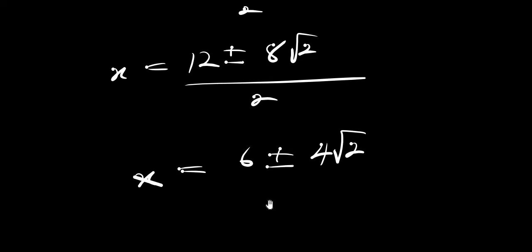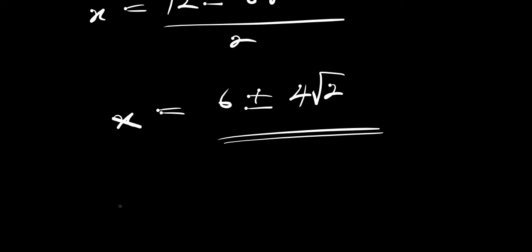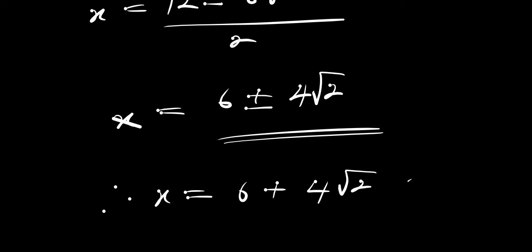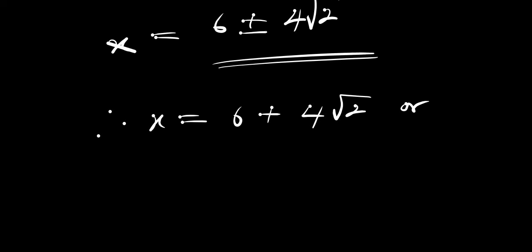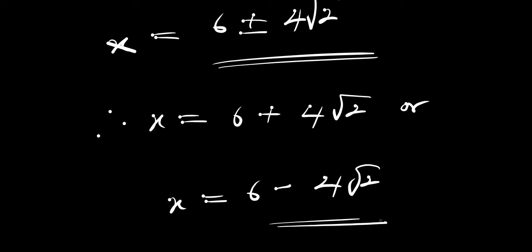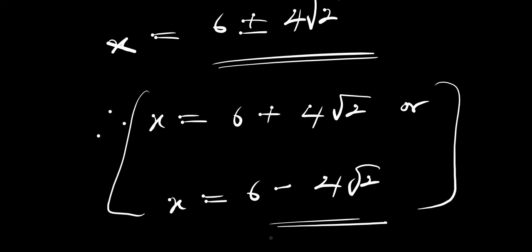So these are the values of x that satisfy this equation. Therefore, x equals 6 plus 4 root of 2, or x equals 6 minus 4 root of 2. That is it for this video. I believe you enjoyed the class. Please kindly subscribe and share this video. Thank you and goodbye.